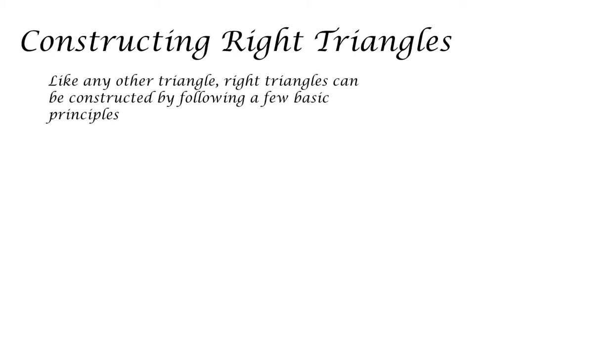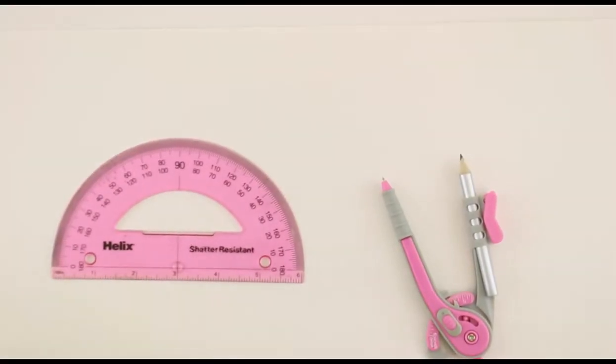Like any other triangle, right triangles can be constructed by following a few basic principles and remembering the basic definition. To ensure that there is a right angle, the essential quality of a right triangle, a segment bisector would be recommended.